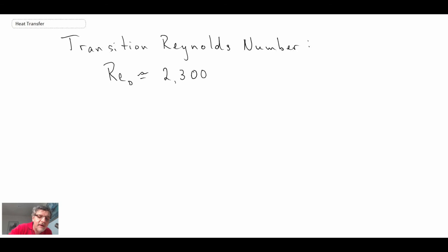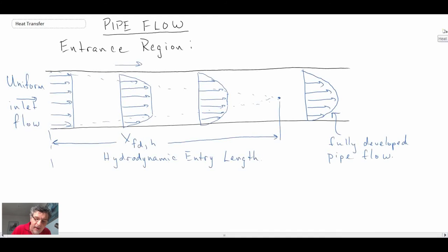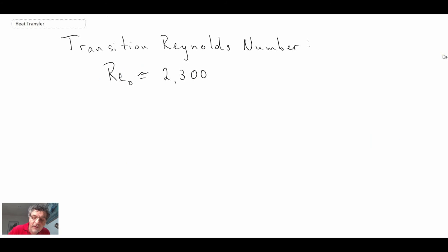And with that we also have a way to be able to define the entry length. If you recall from our schematic, this is the entry length here. So we have a way to quantify this length depending on whether or not we have a laminar or a turbulent flow. So entry length—this would be h denoting hydrodynamic entry length to get to fully developed flow if we have a laminar flow.